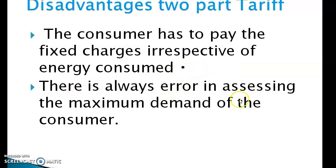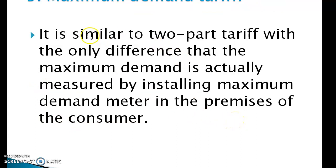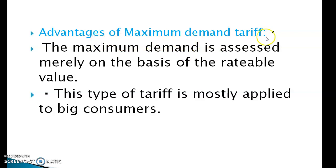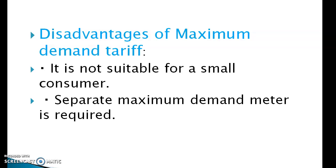Fifth: maximum demand tariff. It is similar to two-part tariff with the only difference that the maximum demand is actually measured by installing a maximum demand meter in the premises of the consumer. Advantage: The maximum demand is assessed accurately on the basis of rateable value, and this type is mostly applied to big consumers. Disadvantage: It is not suitable for small consumers, and a separate maximum demand meter is required.